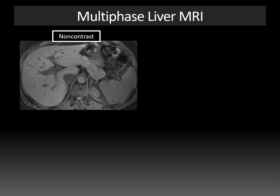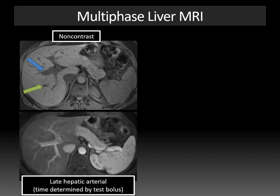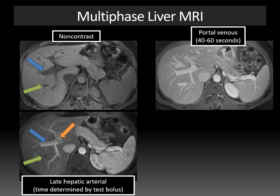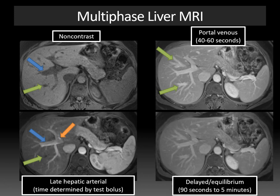Here's a typical T1 3D gradient echo fat-suppressed image without contrast — the portal vein and hepatic vein are hypointense and non-enhancing, and the subcutaneous fat is dark because it's being suppressed. When contrast is given, the late hepatic arterial phase shows the hepatic artery enhancing with the orange arrow and the portal vein with the blue arrow, but the hepatic veins are not yet enhancing. The subsequent portal venous phase shows the hepatic veins diffusely enhancing, with much brighter parenchyma. Then the delayed or equilibrium phases begin, and everything gradually diminishes in signal as contrast leaks out.